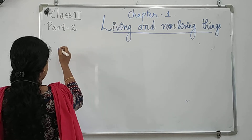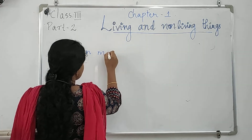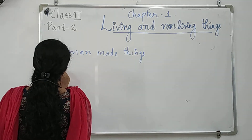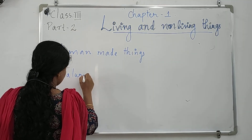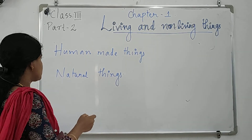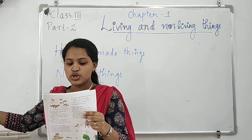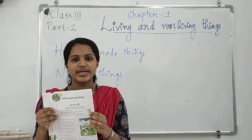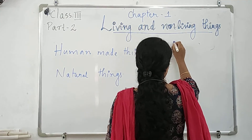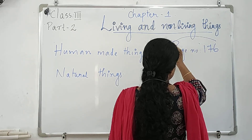In the last class we discussed two points. Can you remember what the first one was? Human-made things and natural things. So today we can go through our chapter. All of you take your textbook, page number 176.